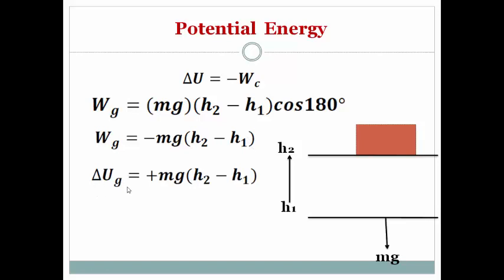Therefore, the change in potential energy will be negative of negative, that will be plus mg times h2 minus h1, or the change in potential energy is mg delta h. Which means that the work done by the conservative force is stored in the form of gravitational potential energy.